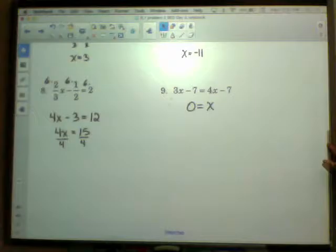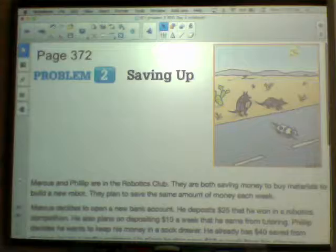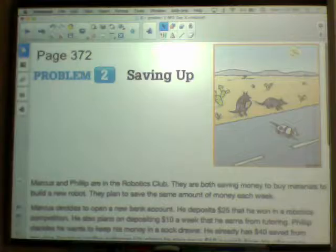Number six is three, number seven x equals negative 11, number eight is 15 fourths, and number nine is zero. I didn't show as much work as maybe I should have on these four problems. If you have questions though, you're always welcome to ask. I'm sure the sub could help, or if you go to MRC.